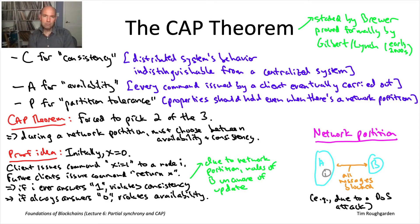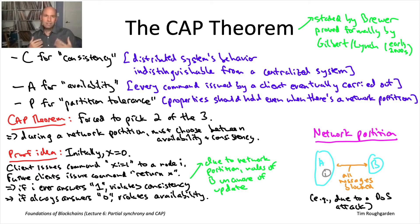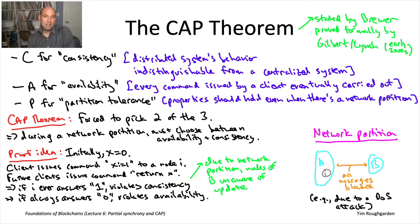If you're running a small private internal network in your company, maybe you're not so concerned about network partitions. The CAP theorem says that if you don't actually expect network partitions, then you have no excuse to fail to provide either consistency or availability — you should be responsible for providing both. This is very much how, in the synchronous model, we insisted on consensus protocols that had both safety and liveness properties.